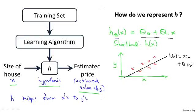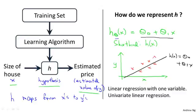And why a linear function? Well, sometimes we'll want to fit more complicated, perhaps non-linear functions as well. But since this linear case is the simpler building block, we'll start with this example first of fitting linear functions, and we'll build on this to eventually have more complex models and more complex learning algorithms. Let me also give this particular model a name. This model is called linear regression, or this for example is actually linear regression with one variable, with the variable being x. So predicting closing prices is a function of the one variable x.